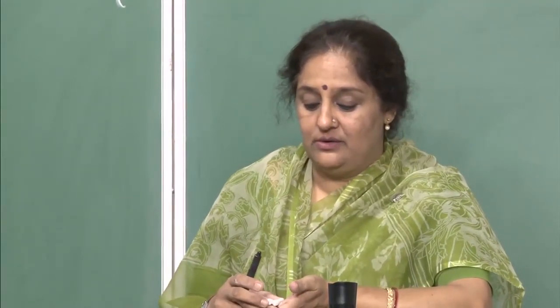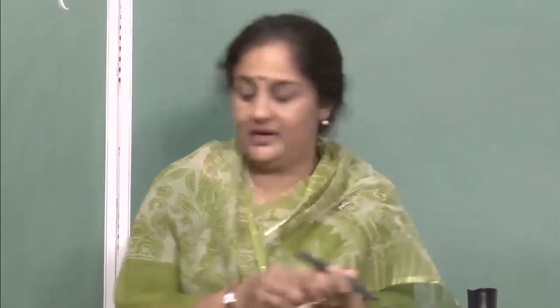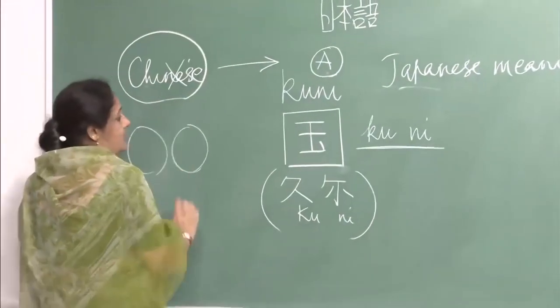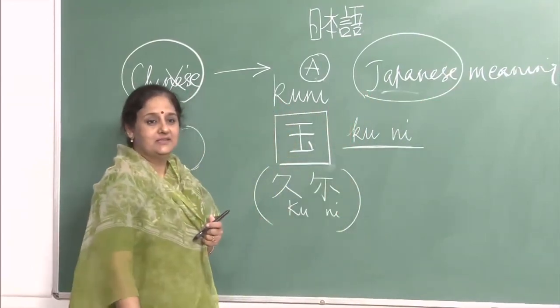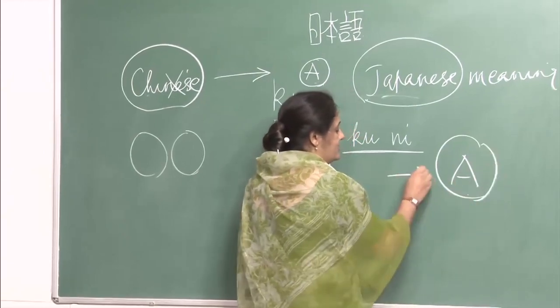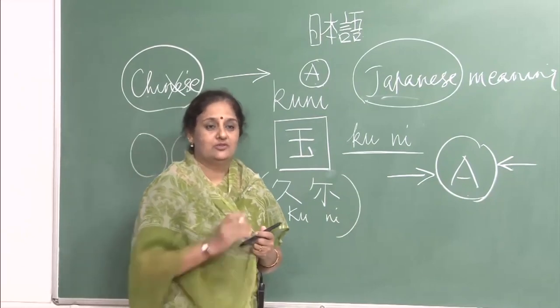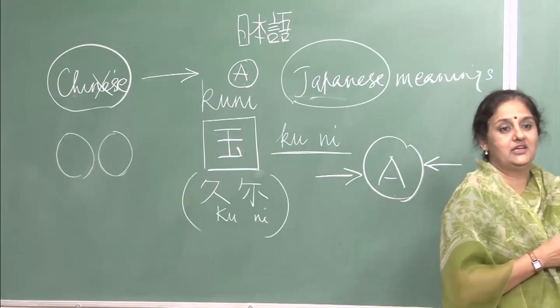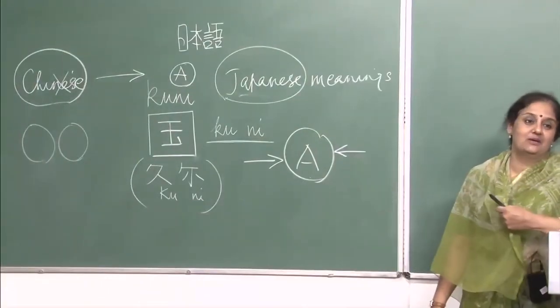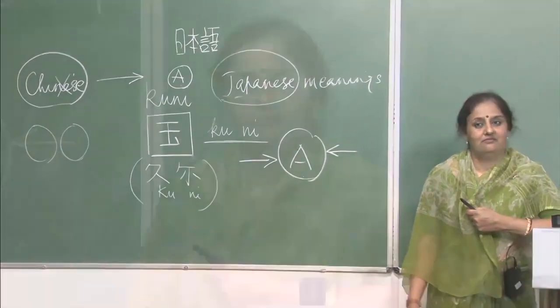It is difficult for foreigners because each character will have a minimum of two readings — a Chinese reading and a Japanese reading. With 2,000 characters and their combinations, the number of readings is enormous. Sometimes a character may even have up to four or five readings with special readings. So if you do not see, practice, and read these characters every day, it becomes quite difficult to remember them.